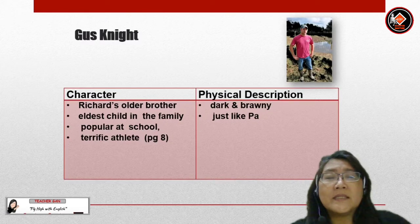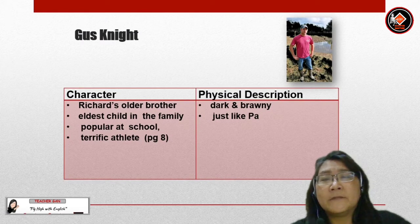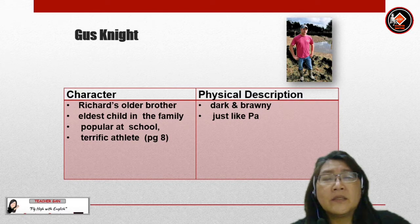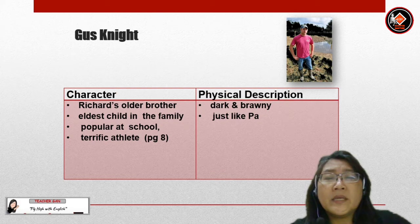Let's now look at Gus Knight. Gus Knight is Richard's older brother. He is the eldest child in the family. He is popular at school and he is a terrific athlete. Physical description: Gus Knight is dark and brawny, just like his Pa.